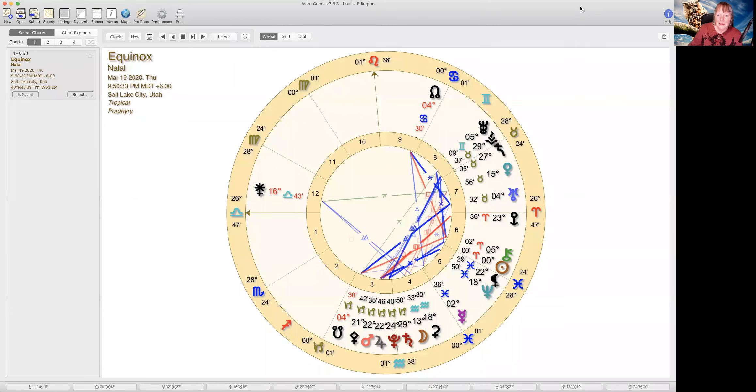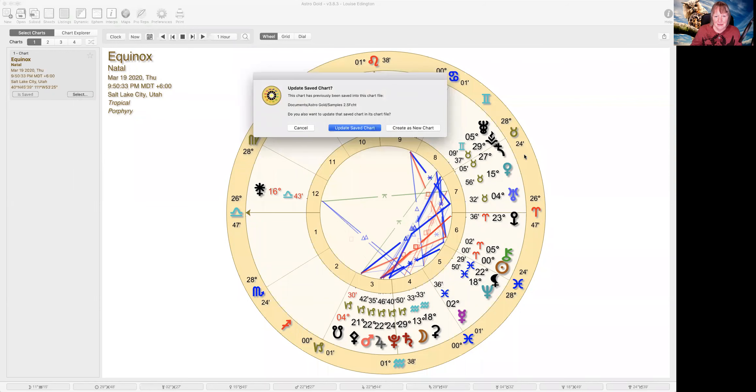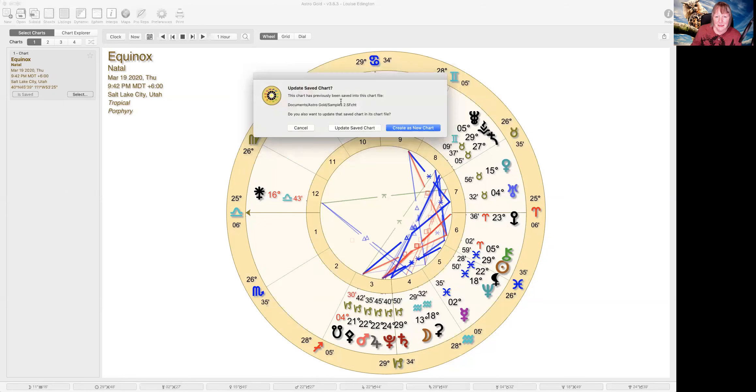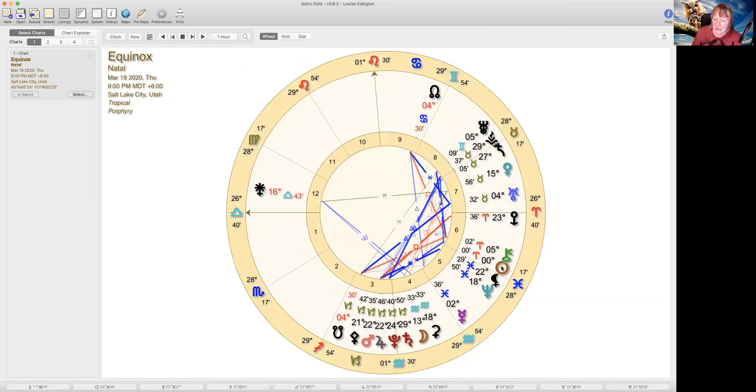So let me just get that up. Okay, and now I will share. So the equinox itself is actually at 9:50 PM. The sun actually moves into Aries. So I'm just going to just adjust for that at 9:42 PM.